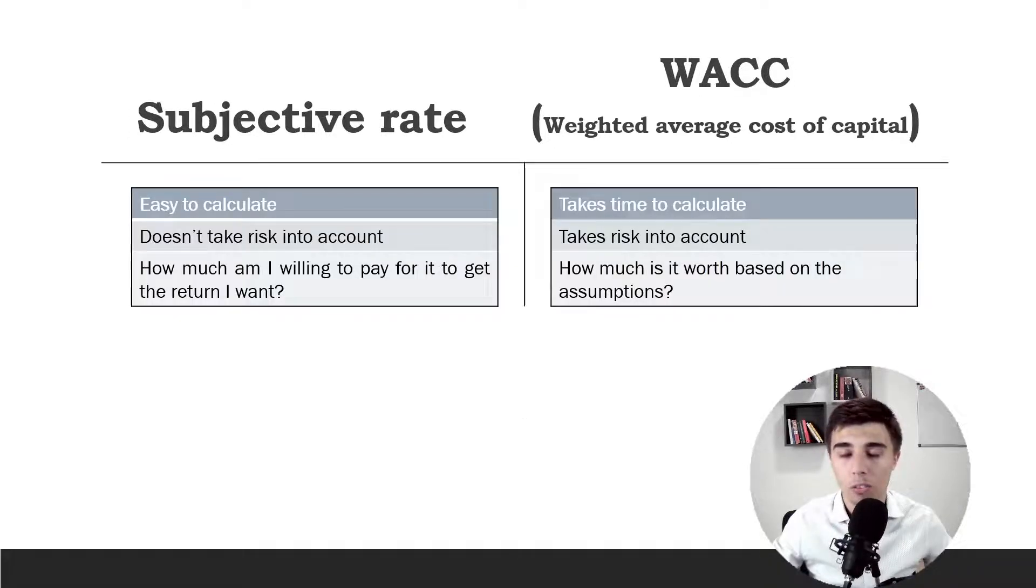So to summarize these two rates: the subjective rate is very easy to calculate—it's not even being calculated, we just make it up based on our required rate of return. But it doesn't take risk into account, and the outcome is how much am I willing to pay for this company to get the return that I want. On the other side, the weighted average cost of capital can take some time to calculate. It does take risk into account and it leads to the intrinsic value of the company. So we need to make this distinction.